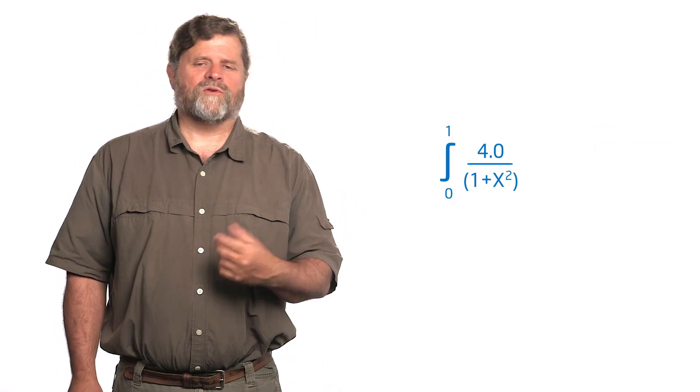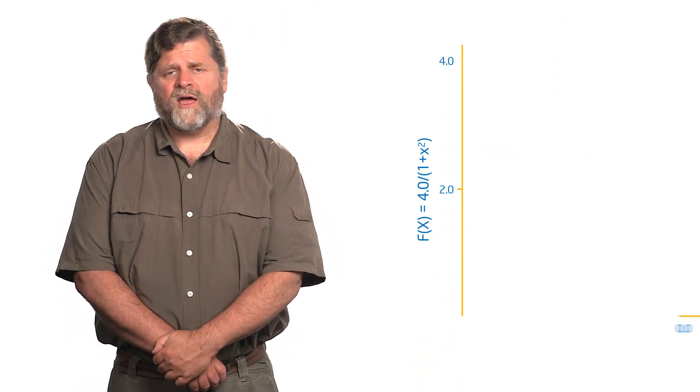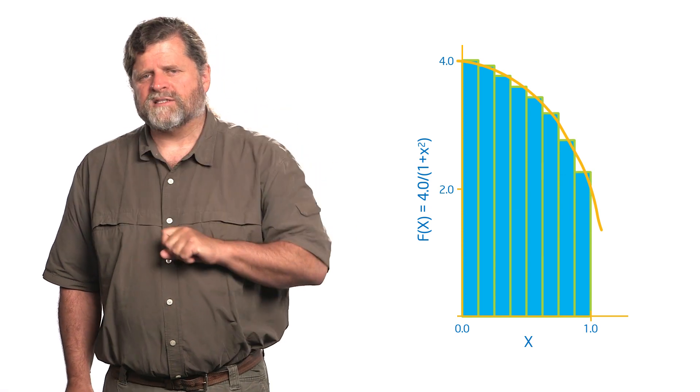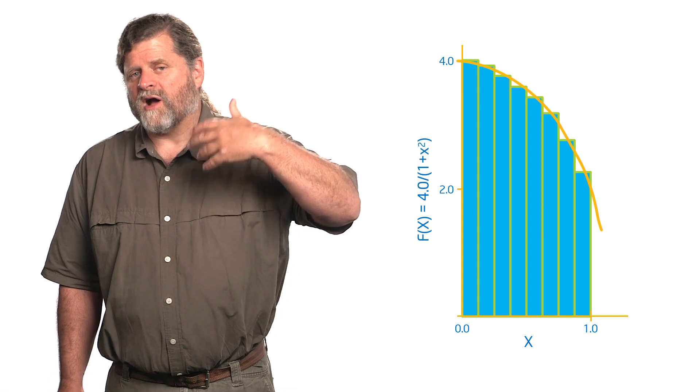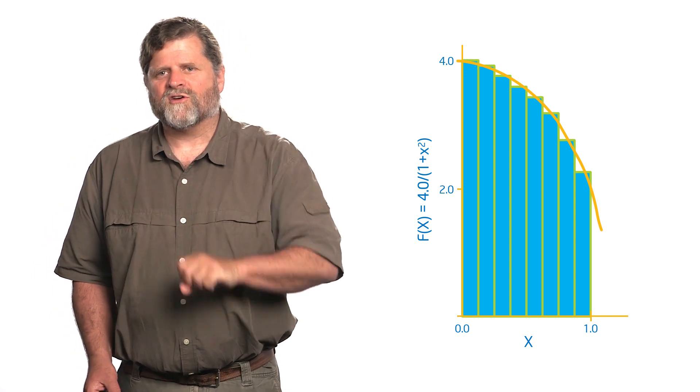We're going to use a running example through the next several modules — often called the hello world program of parallel computing. We're going to integrate the function 4 over (1 + x²) from 0 to 1. The beautiful thing about this function is that the exact integral equals pi, which is really nice because if we solve this numerically, we have a way of checking the answer. We'll solve this by straightforward numerical integration — taking the area under the curve and representing it as a series of rectangles, summing their areas to approximate the integral.